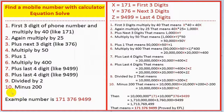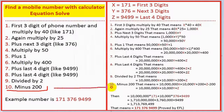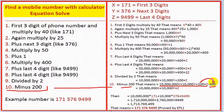Step ten: minus two hundred. The result minus two hundred — the two hundreds cancel out, giving you the final result here.